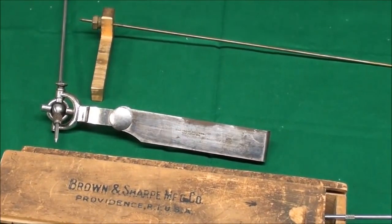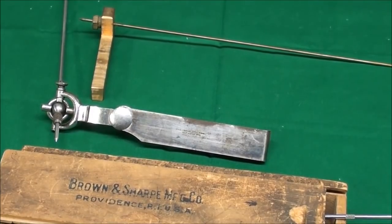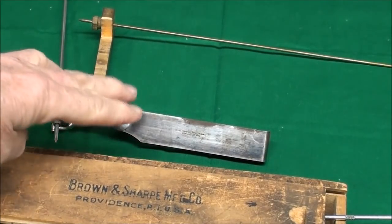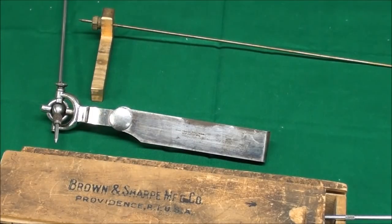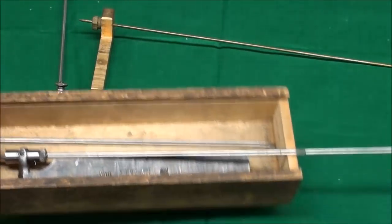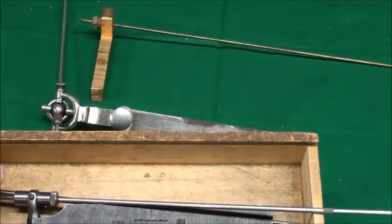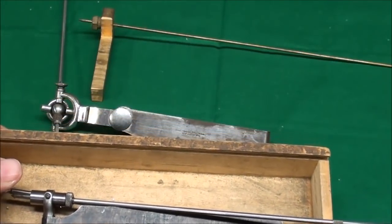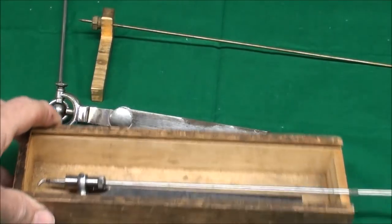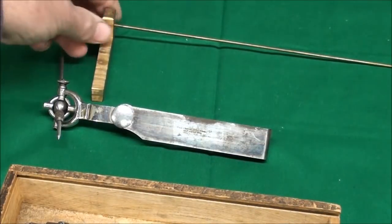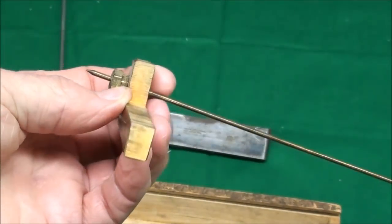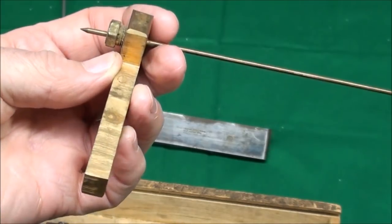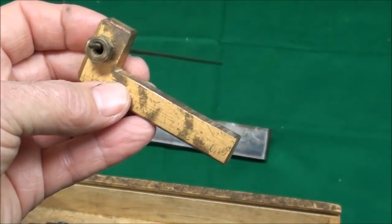You were right, it is a lathe center tester. Here's three different versions of it. This is the one that I showed in the video, that's a Starrett number 65 center tester, and that's the Brown and Sharp version called a lathe test indicator number 736. Here's one I made years ago before I even knew that they made a commercial one. I think I saw the plans in Popular Science or something, but they all work in the same manner which I'm going to show you here presently.